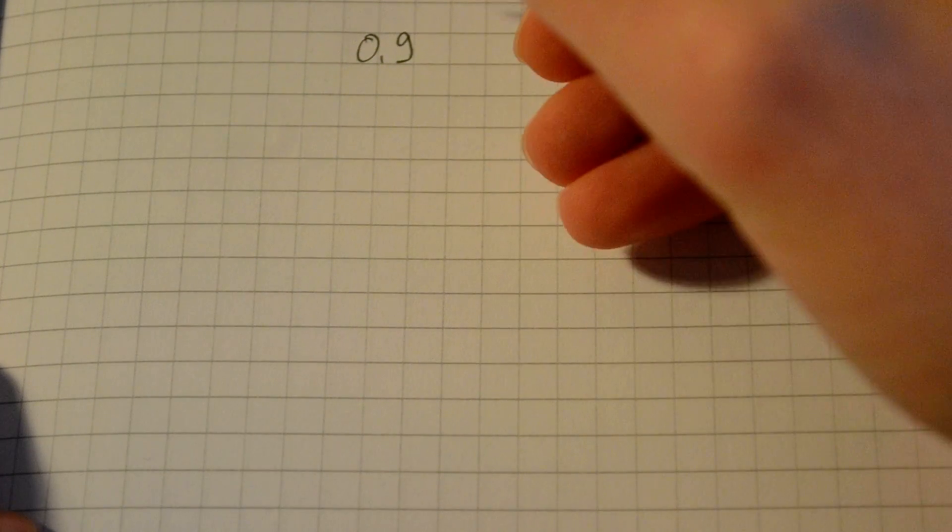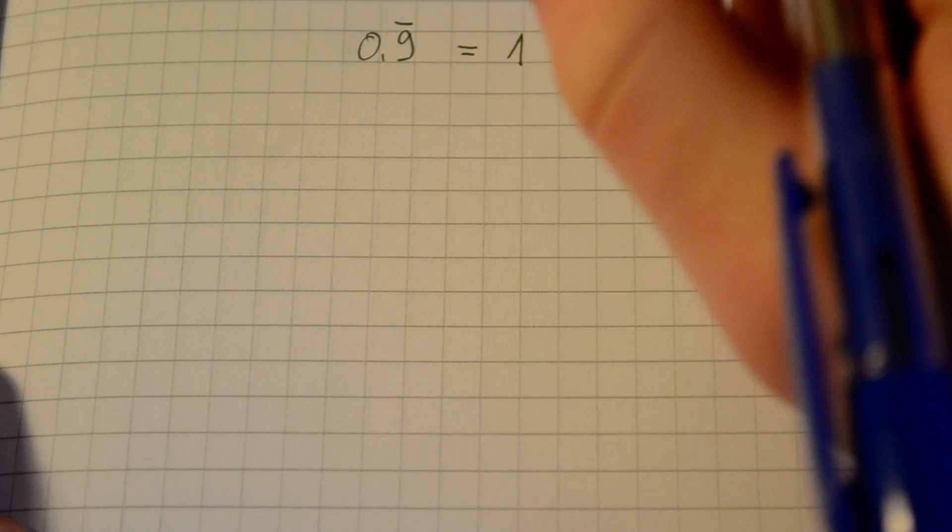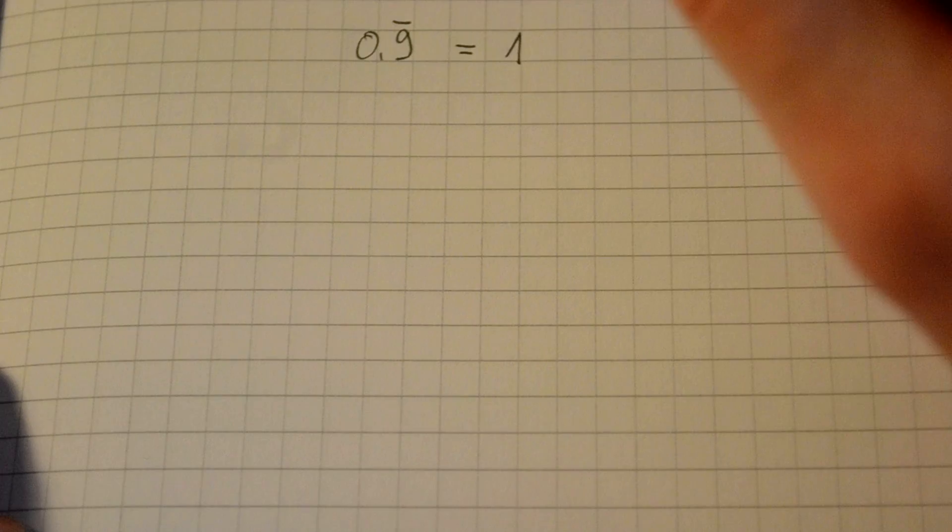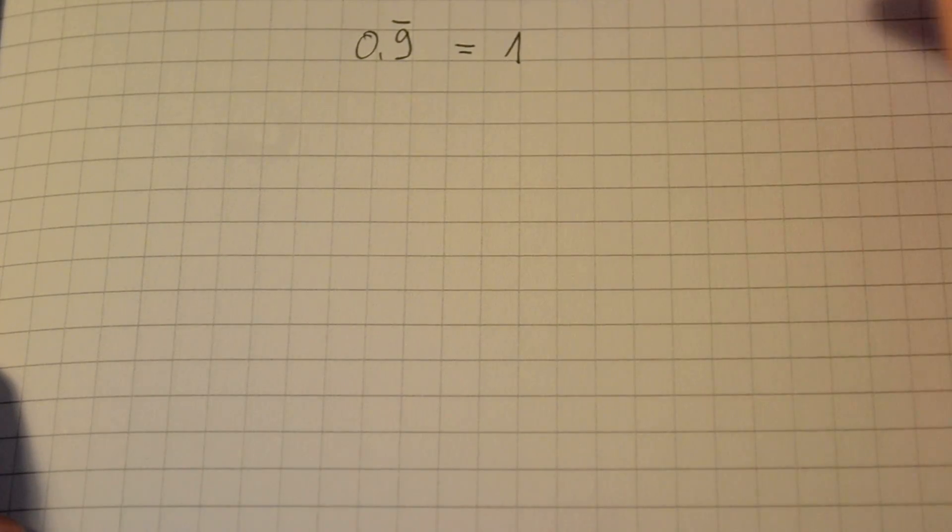And the question is, why is 0.9 repeating the same as 1? Now before I start anything, let me say that this is what we actually learned in high school and this is not something I've just made up. Well, let's get straight to it.